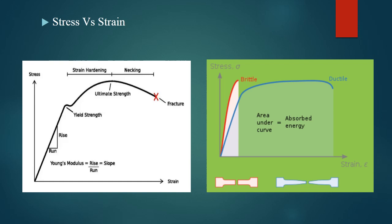Even after the yield point, if we increase strain, the stress slowly increases. It gains a maximum value — that is the ultimate strength of the material. The region between the yield strength point and the ultimate strength point is termed as strain hardening.